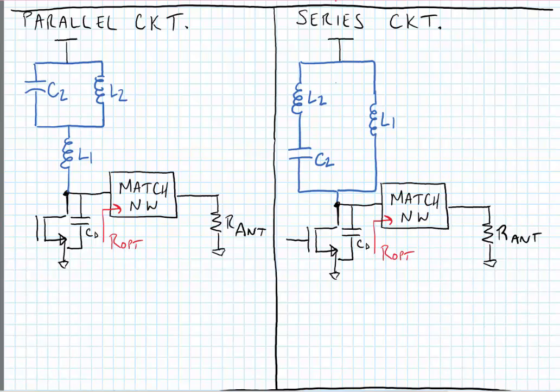If we solve for the aforementioned conditions such that the impedance looking into the network presents an open circuit at the fundamental and the third harmonic and a short circuit at the second harmonic, we could come up with the following component values.